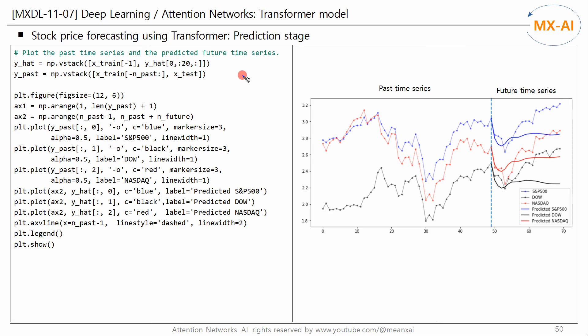We visualize the last 50 data points of the training data, test data, and prediction results. The left chart shows the time series of the last 50 periods of the training data, and the right chart shows the actual time series of the test data. The solid lines are the predicted time series. As mentioned earlier, the Transformer can only learn from past memories and cannot know future events, so the predicted results do not match the actual results. Remember, this is a chart with the long-term trend removed. To obtain predictions for the original stock prices, we would need to reinsert the long-term trend into the predicted time series.